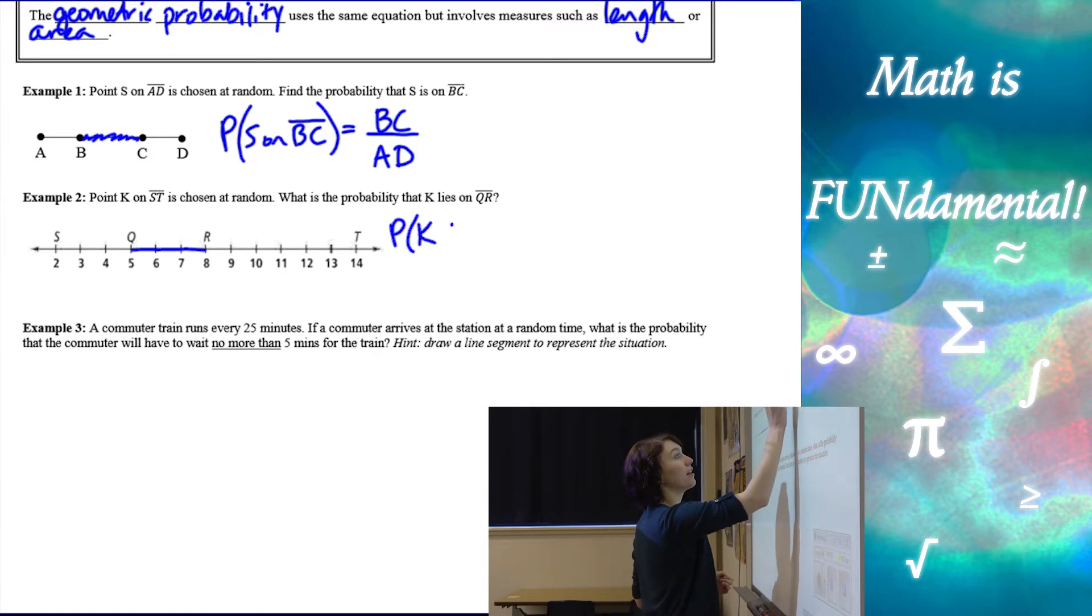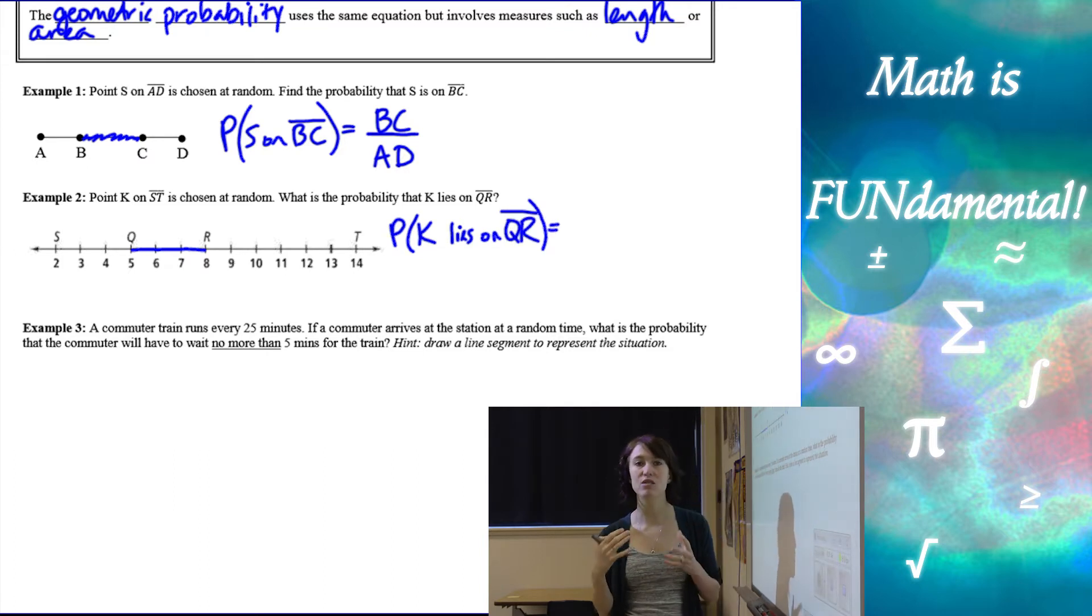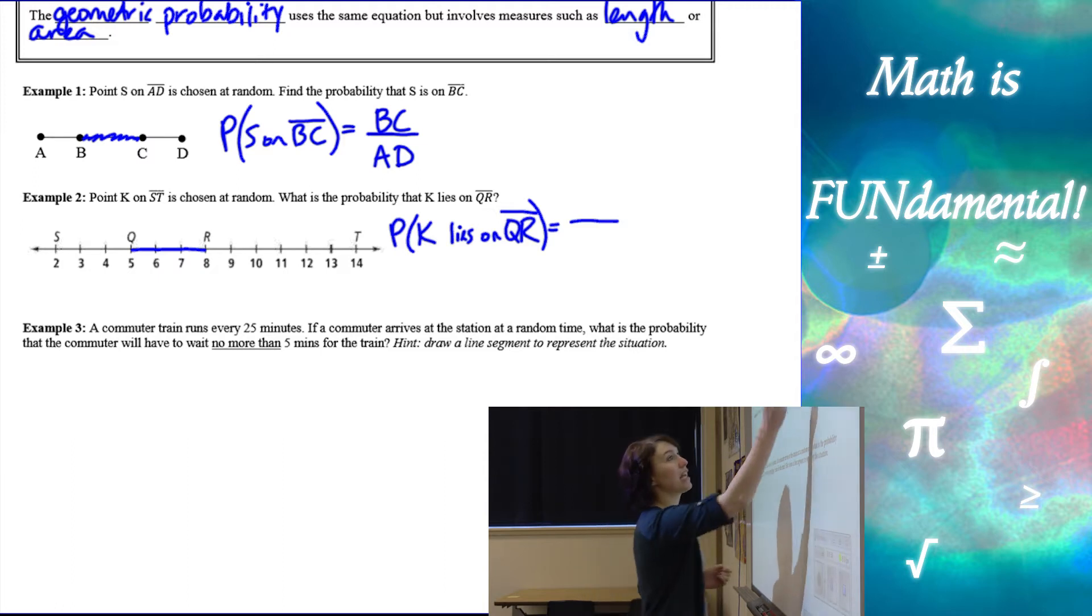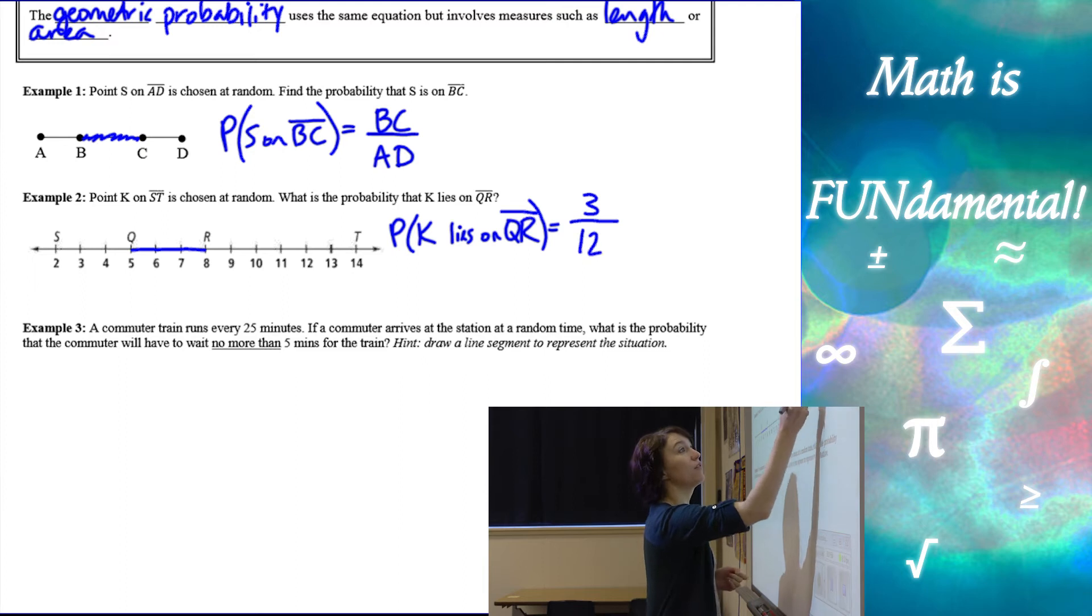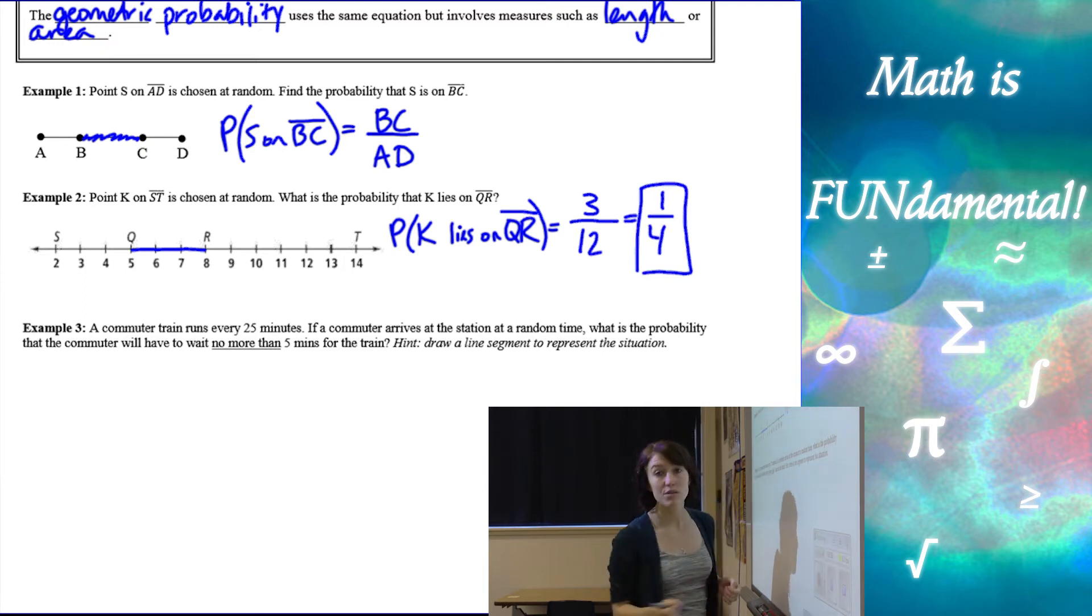So we have probability that K lies on QR. When we write probabilities we always want to put P and then in parenthesis what we're looking for. Alright and then the length of QR from 5 to 8 is 3 and the total length from 2 to 14 is 12. So the probability is going to be 1 fourth or 25 percent.